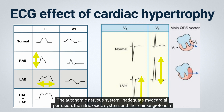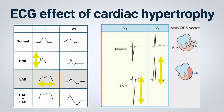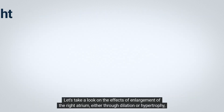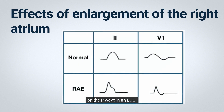The autonomic nervous system, inadequate myocardial perfusion, the nitric oxide system, and the renin-angiotensin axis may all play roles in the complicated perturbations linking hypertrophy and fibrosis of heart muscle cells with dysfunction of other organs. Let's take a look at the effects of enlargement of the right atrium, either through dilation or hypertrophy, on the P-wave in an ECG.